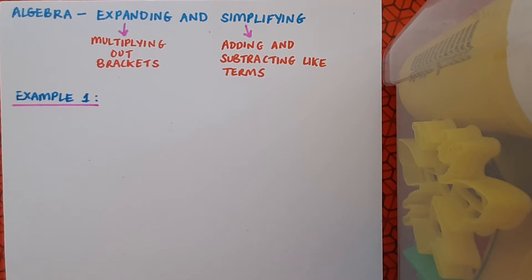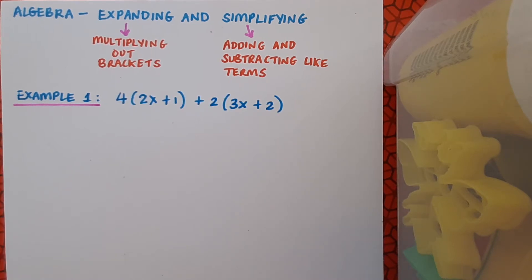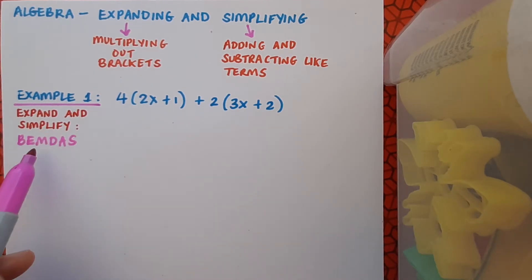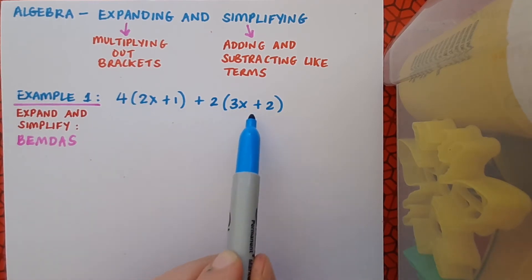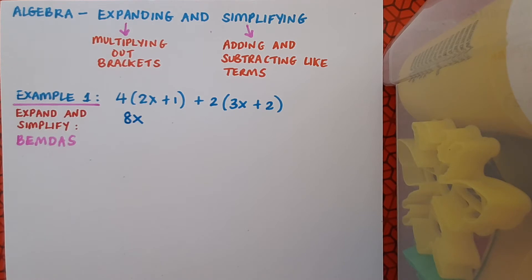Let's have a look at an example. Example 1 is 4(2x+1) + 2(3x+2). Our instruction is to expand and simplify. Our rules from BEMDAS still stand. So we should do our multiplication before any possible addition or subtraction. First, multiplying 4 by 2x gives me 8x, and 4 by 1 gives me 4.